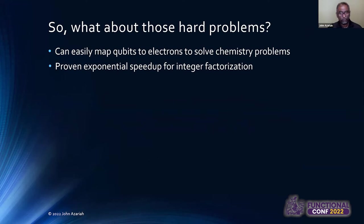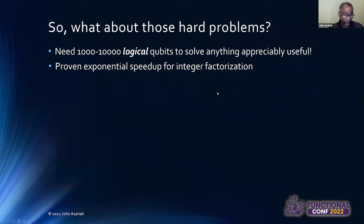And now about the hard problems. What about the NP-complete stuff? So we can solve, as I mentioned, the molecule simulation problem, which is a canonical quantum computing problem. And in order to do that, we need a lot more qubits than we have. We need between 1,000 and 10,000 logical qubits to solve anything that's efficiently useful.